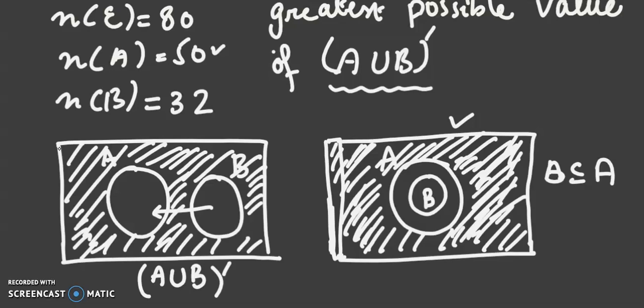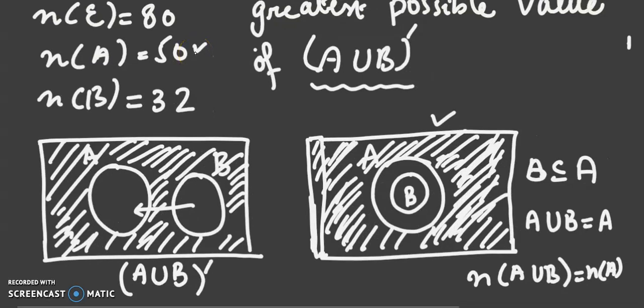And when B becomes the proper subset of A, then we can say that A union B is equal to A. Like here you can see A union B is equal to A. So the number of elements in A union B will be equal to 50. So the number of elements in A union B is equal to 50.